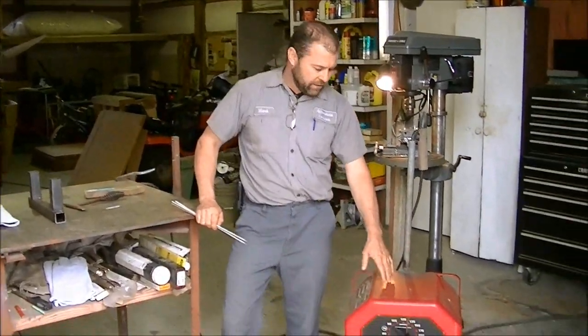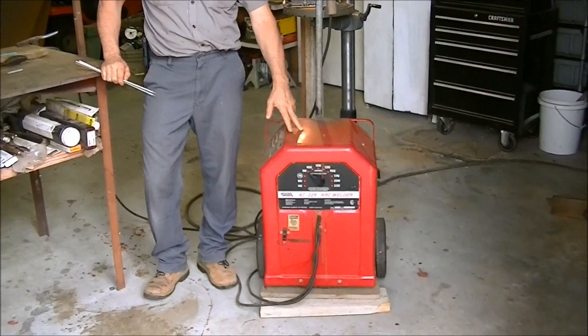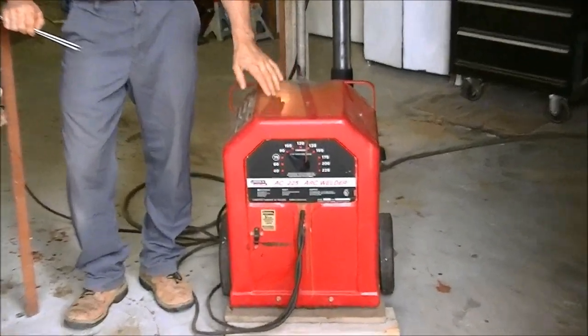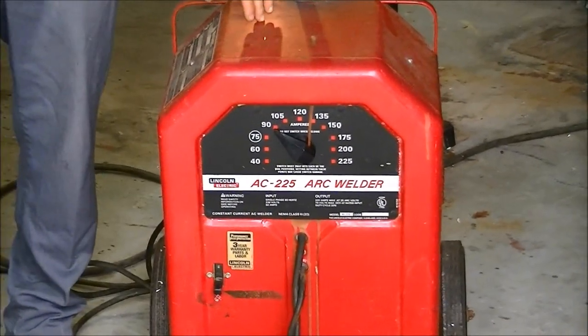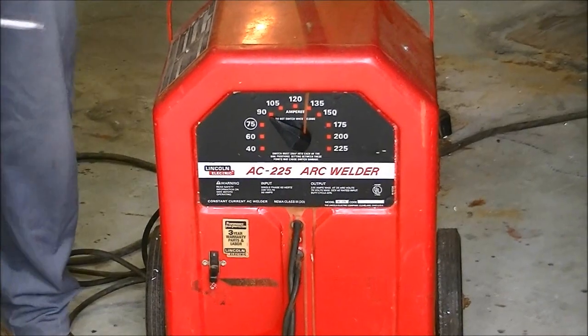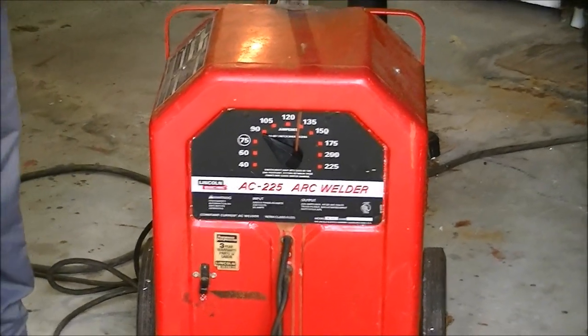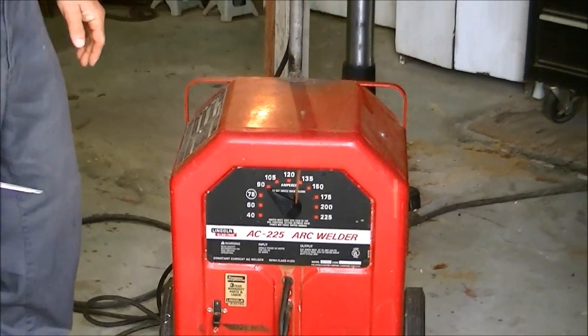We're going to be using a Lincoln AC weld machine. It's got a 20% duty cycle. It's not the top of the line, just a good welding machine for the average guy to have around the house or the farm to do some basics with.